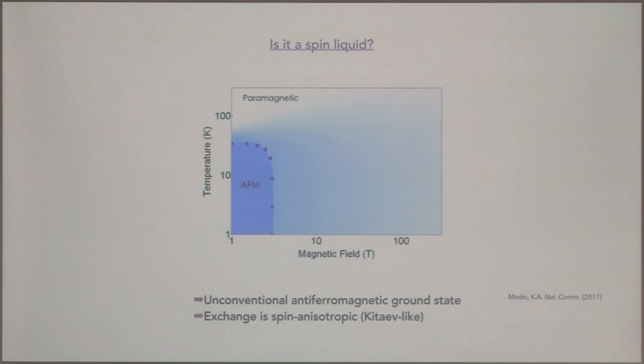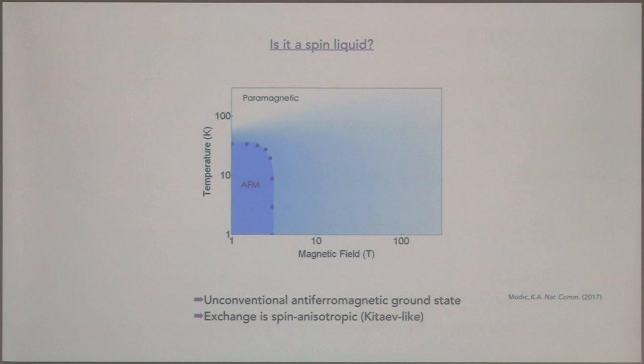The first question is: is it a spin liquid? And the answer is no — it doesn't appear to be, because at low temperatures we end up with a transition to antiferromagnetic order. In most materials, this seems to be a generic phase diagram, true for both the honeycomb iridates and ruthenium trichloride. The transition into that antiferromagnetic state seems to be at an energy scale which is much smaller than the apparent exchange interaction energy scale in the system.